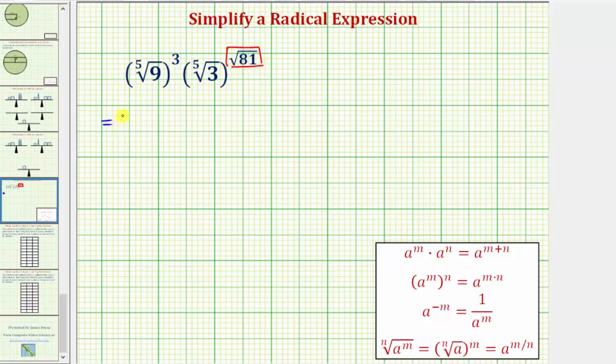So let's rewrite this as the fifth root of - since nine is a perfect square, let's write nine as three squared. This is still raised to the third power, and we have times the fifth root of three raised to the power of nine.